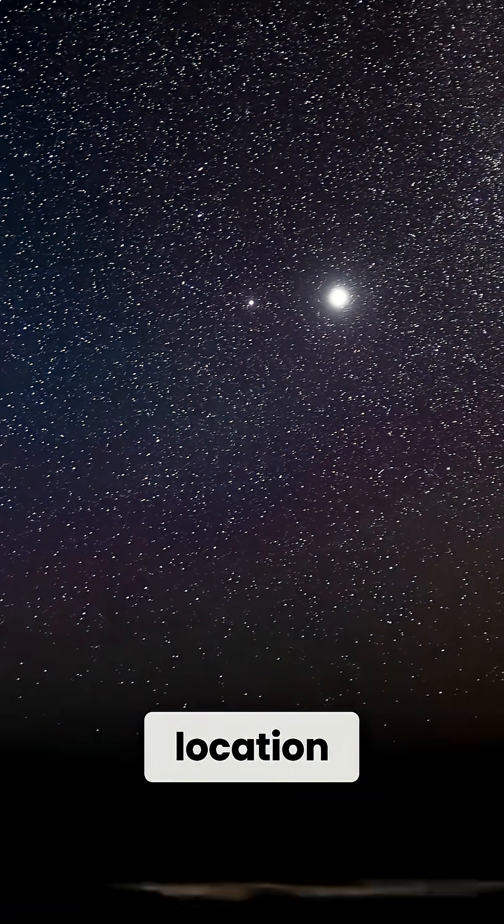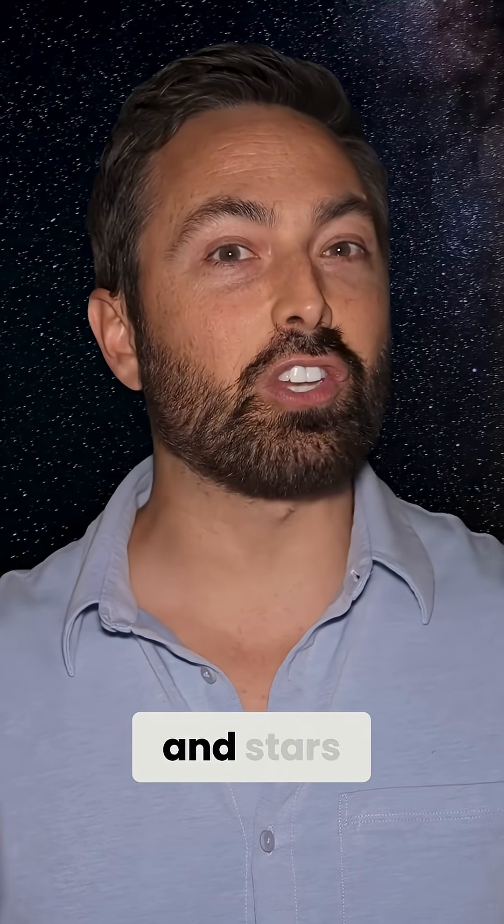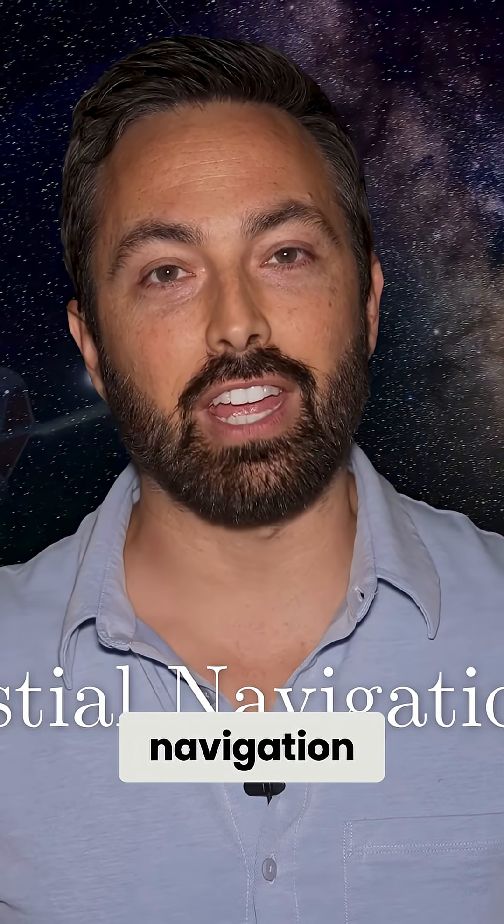As an independent check on their location, Noonan would take measurements of the sun, moon, and stars. This is known as celestial navigation.